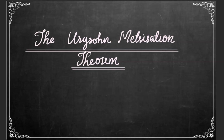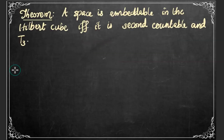The Urysohn Metrization Theorem. In the last section, we proved that every T1 space is embeddable in a cube. In this section, we shall topologically characterize the subspaces of the Hilbert cube. That is, we shall find necessary and sufficient conditions under which a space can be embedded into the Hilbert cube. Theorem: a space is embeddable in the Hilbert cube if and only if it is second countable and T3.